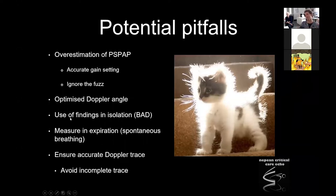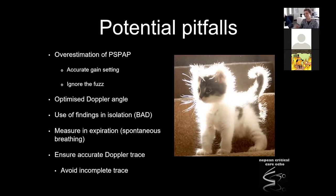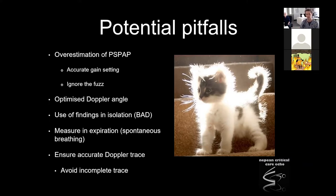You've got to make sure your Doppler angle is perfect. Don't use findings in isolation — take the clinical picture into account, take all the echo values. Each one has good things and bad things; it's about weighing it all up. Measure at the same time — respiratory variation, particularly on the right side of the heart, means you should measure at end-expiration in spontaneously breathing patients. In the critically ill, I try to measure in the same cycle consistently so you can compare values. Ensure you get the maximum Doppler trace by getting good Doppler angles.